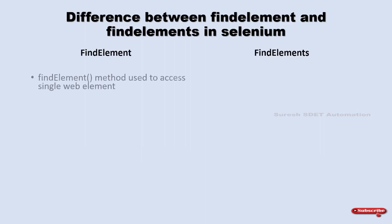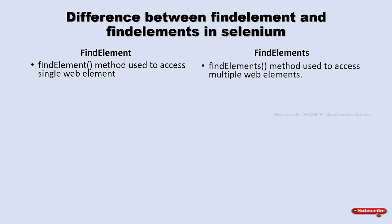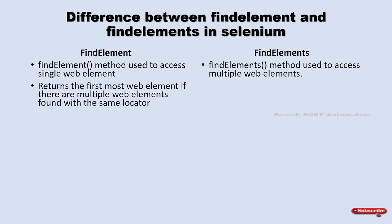findElement is used to access a single web element. When it comes to findElements, it is used to access multiple web elements. It returns the first matching web element if there are multiple web elements found with the same locator. Whenever you write an xpath, you concentrate on identifying a unique path or unique web element.